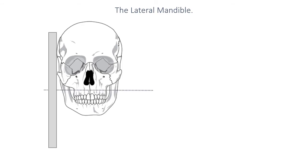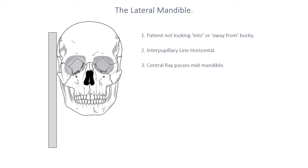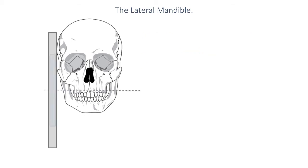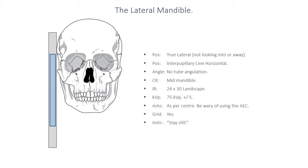The lateral mandible tends to be undertaken reasonably infrequently. When a patient has a queried mandibular fracture, superimposing the two mandibular sides over each other doesn't really clarify the situation — if anything, it makes it a little more challenging. To perform a lateral mandible projection, the head should be in a true lateral position. Having the patient positioned in approximately a 45-degree rotation of their thorax so their head is turned and in a true lateral position is the best approach.